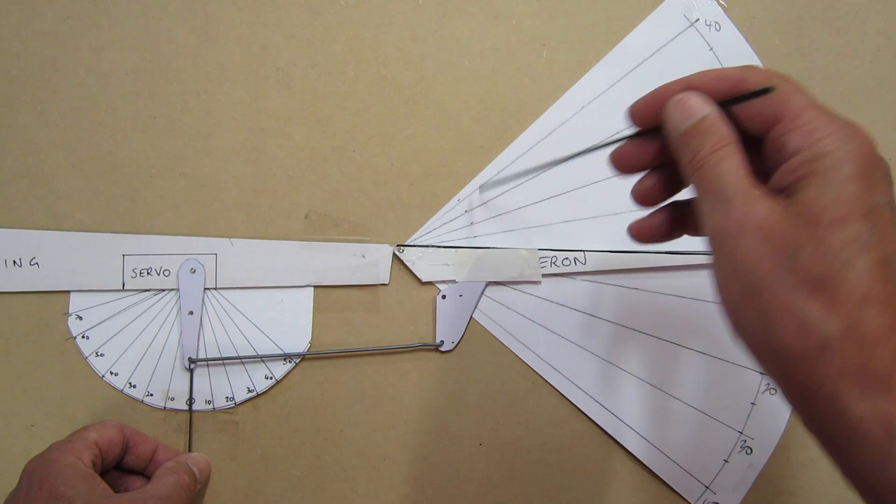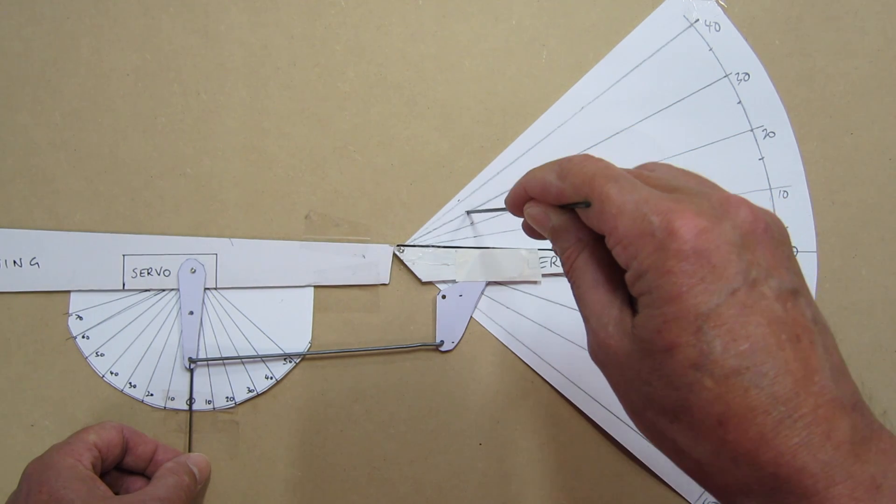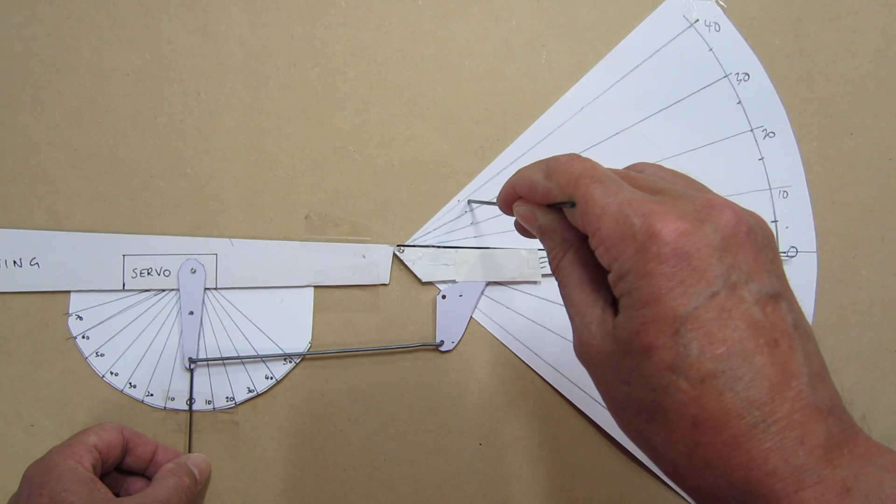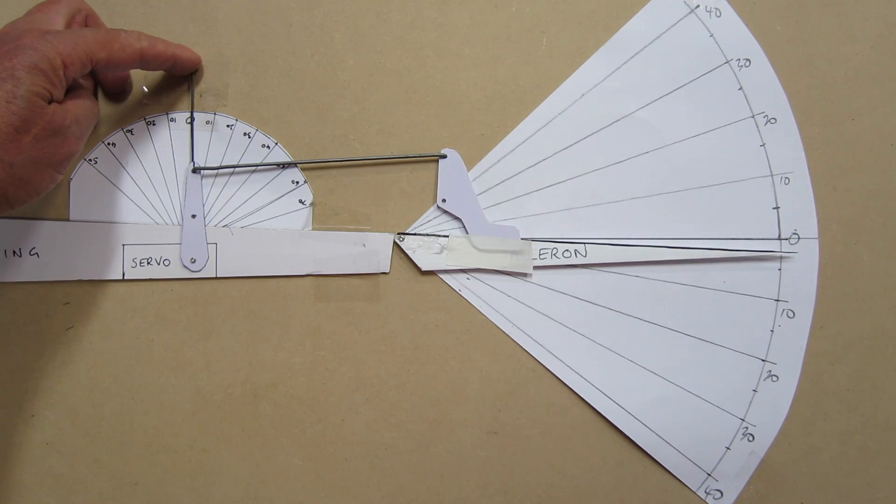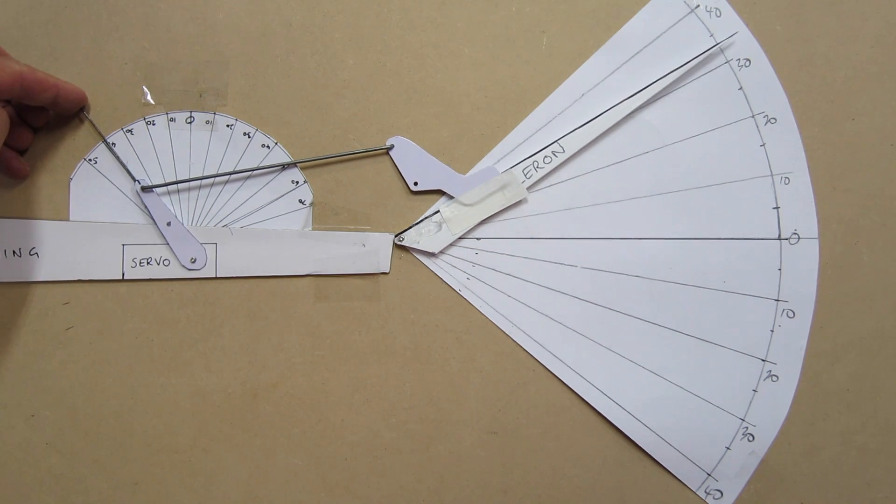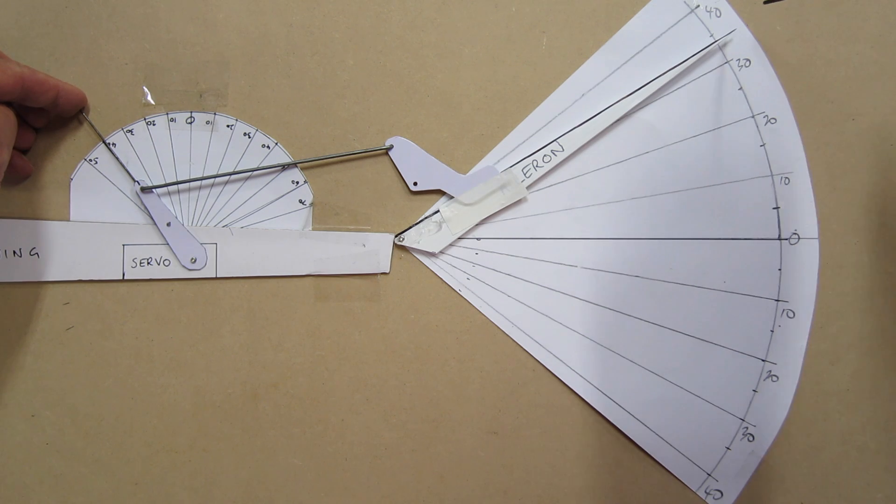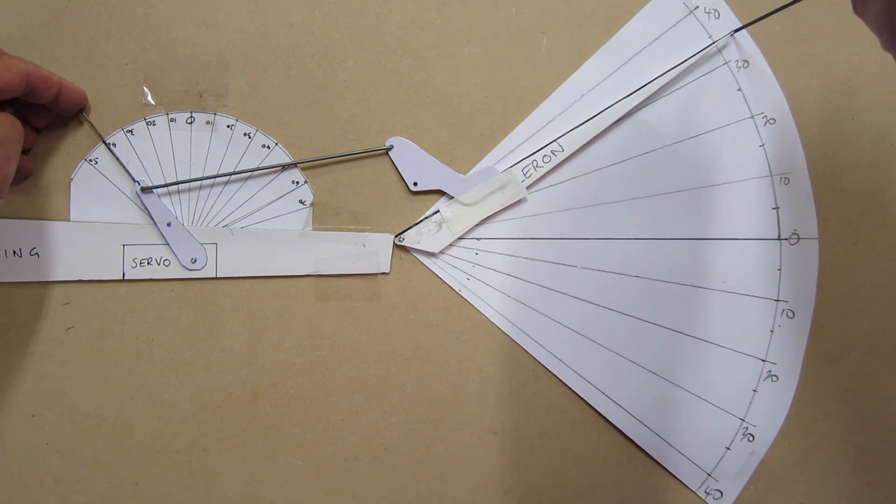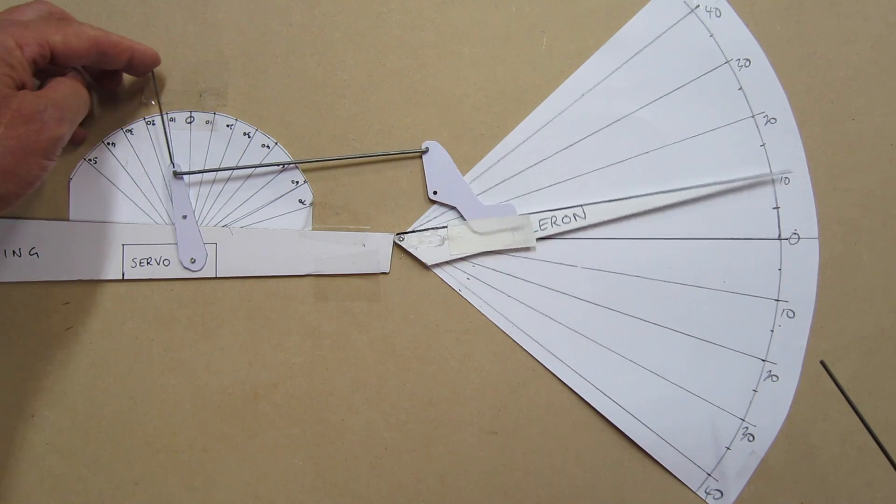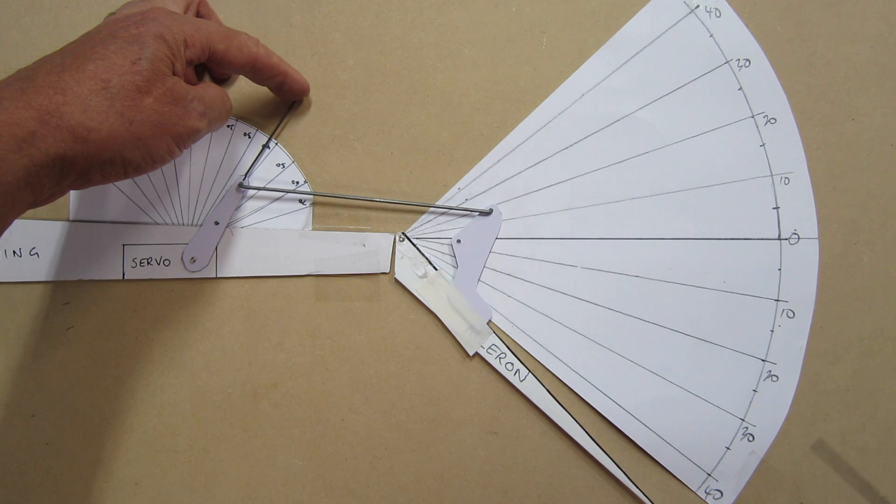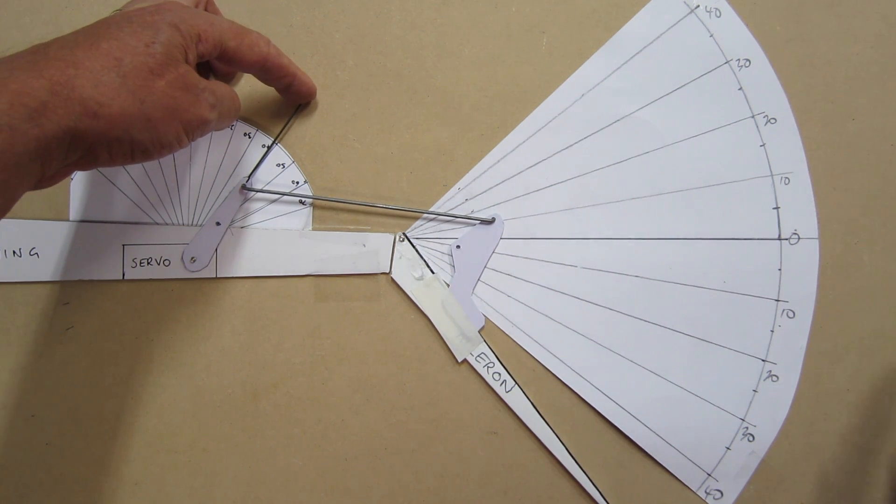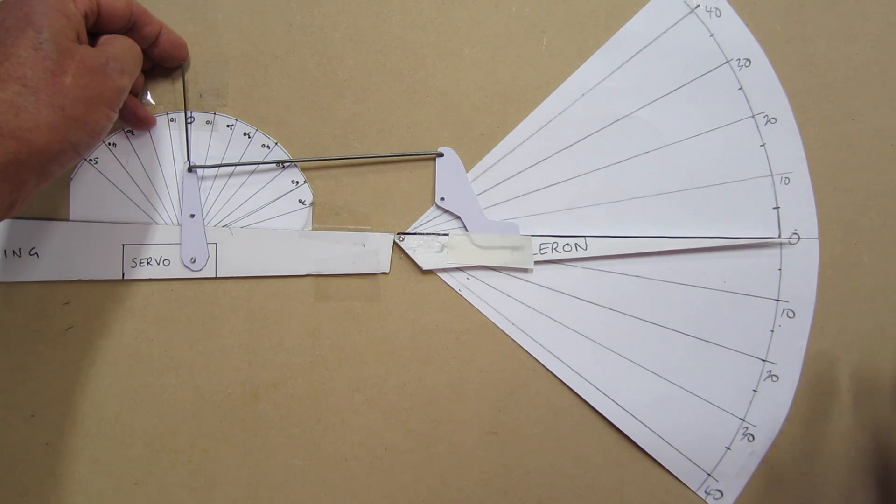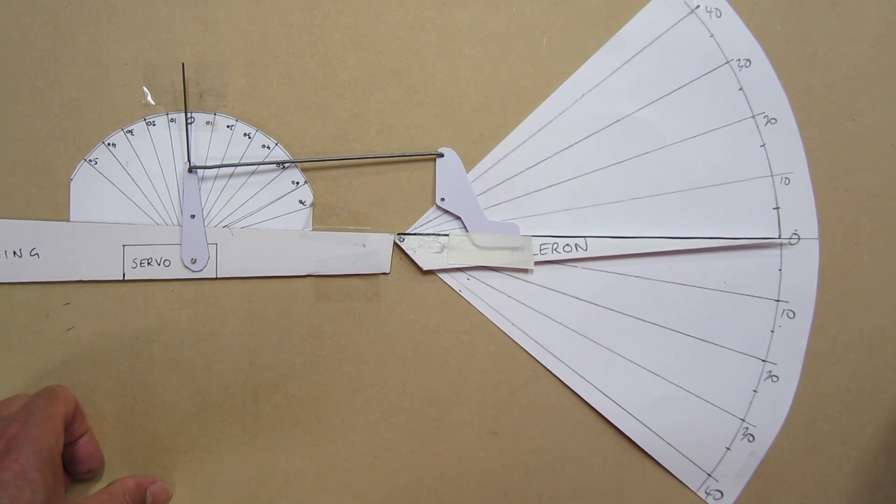Now I'm going to flip the control horn to the upper surface and see what effect that has. We'll go forward 40, and the aileron goes up to about 34. Go back 40, and it goes off the scale way past, about 50, 55 degrees down. So that is introducing reverse differential, which is not what you ever want.